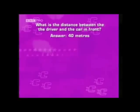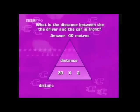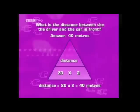The answer is 40 meters. Using the formula triangle — distance equals speed multiplied by time — we know the speed is 20 meters per second and the time is two seconds. That's 20 times 2, which is 40. Remember, the unit for distance in this case is meters, so the answer is 40 meters.